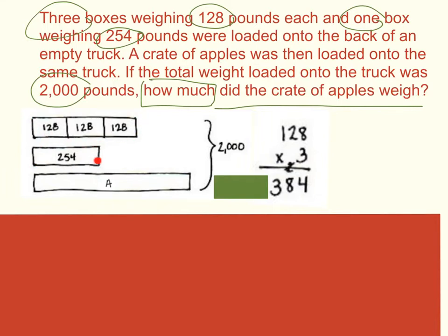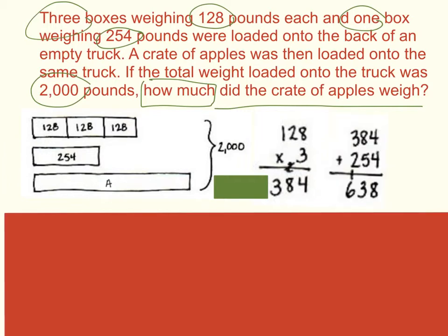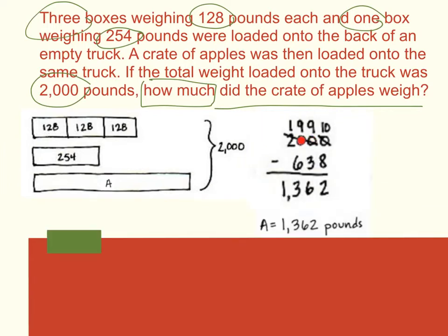The total weight of my one box is 254. Next, I need to add these together: 384 plus 254 will give me a sum of 638. Then finally, I take 2,000 and subtract 638 to get my final difference of 1,362. So I know that my box of apples weighed 1,362 pounds.